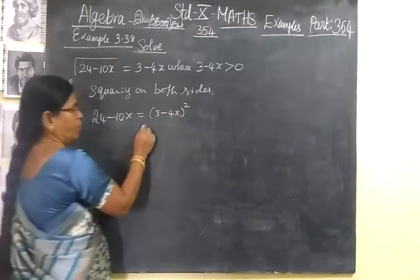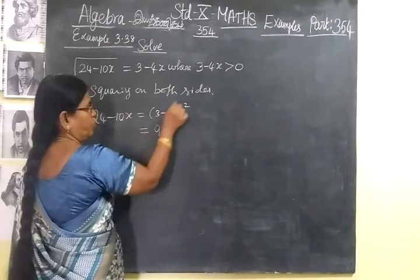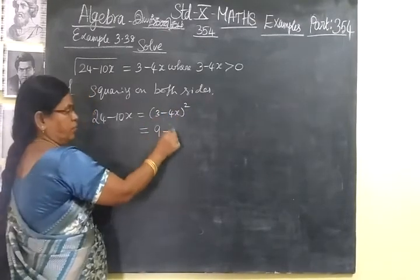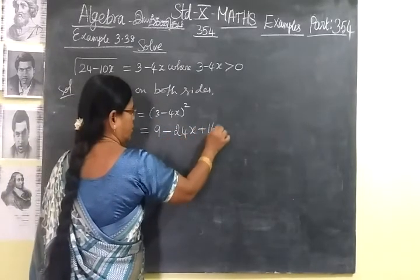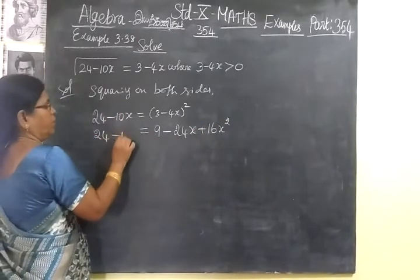This is just the form (a-b)², so a² minus 2ab plus b². So 3² is 9, 2×3×4x is 24x, plus 16x². Here 24-10x.